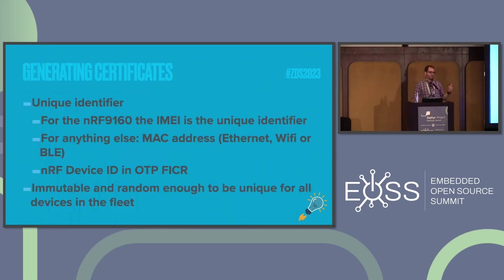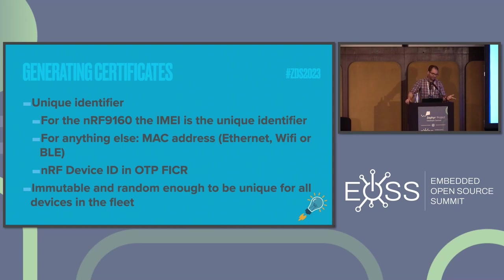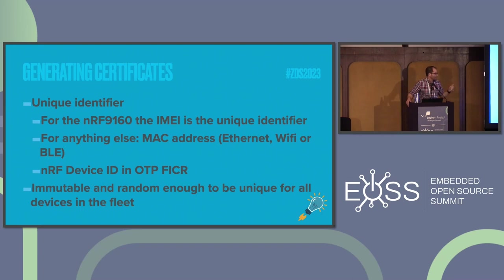For unique identifiers, there are a couple of different things you can do. Generally this is like the client ID you're going to be working with. For the NRF9160, you can use something like an IMEI, or the FICR register, which is an OTP register — a random number generated during manufacturing. For anything else, you can use MAC addresses or anything like that, as long as it's immutable and random enough to be unique across your fleet. Most chips will have some type of random ID generated, so check on your end.